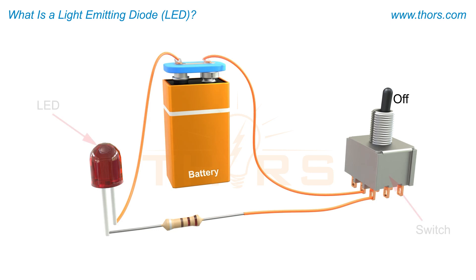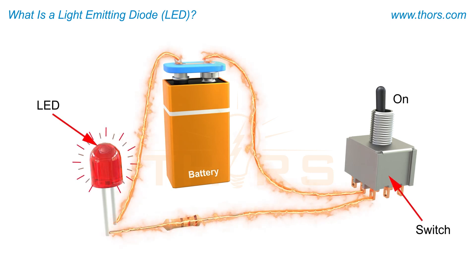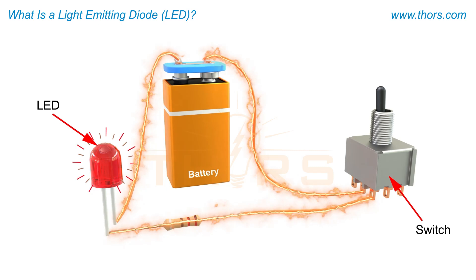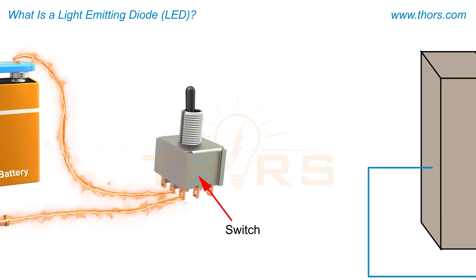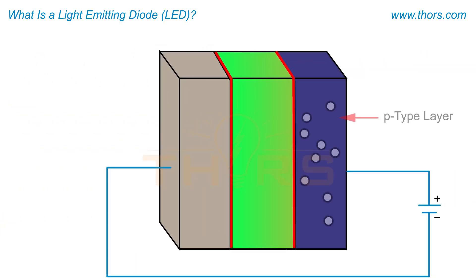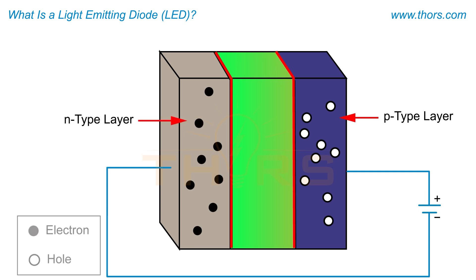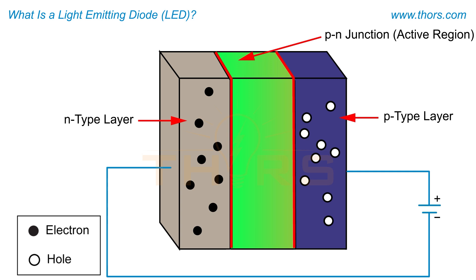A light emitting diode, or LED, is a semiconductor device that converts electrical energy into optical energy. An LED consists of a P-type layer, which has positively charged holes, and an N-type layer, which has negatively charged electrons, that are combined to form a P-N junction, which is the active region where light emission happens.